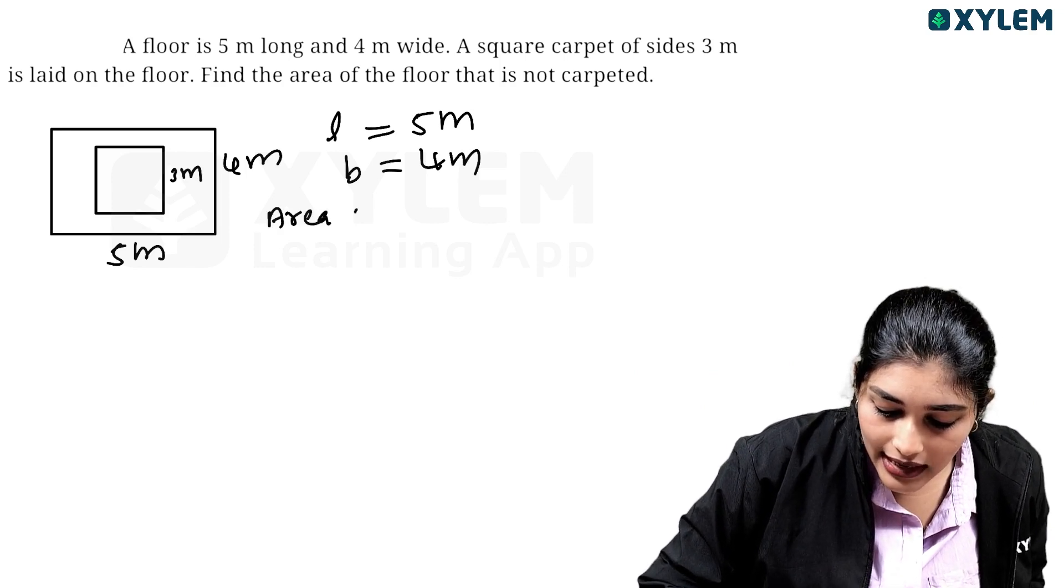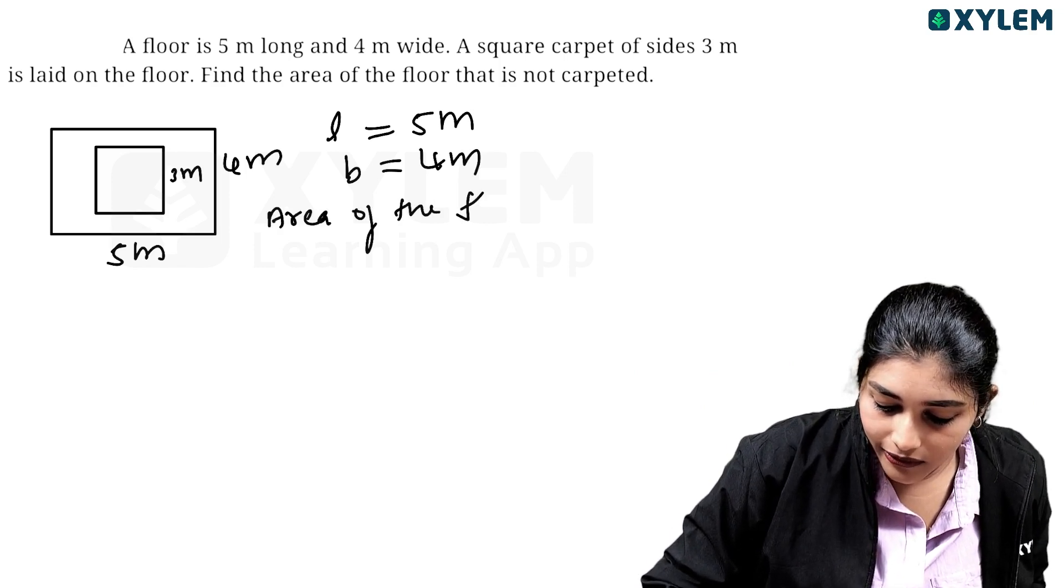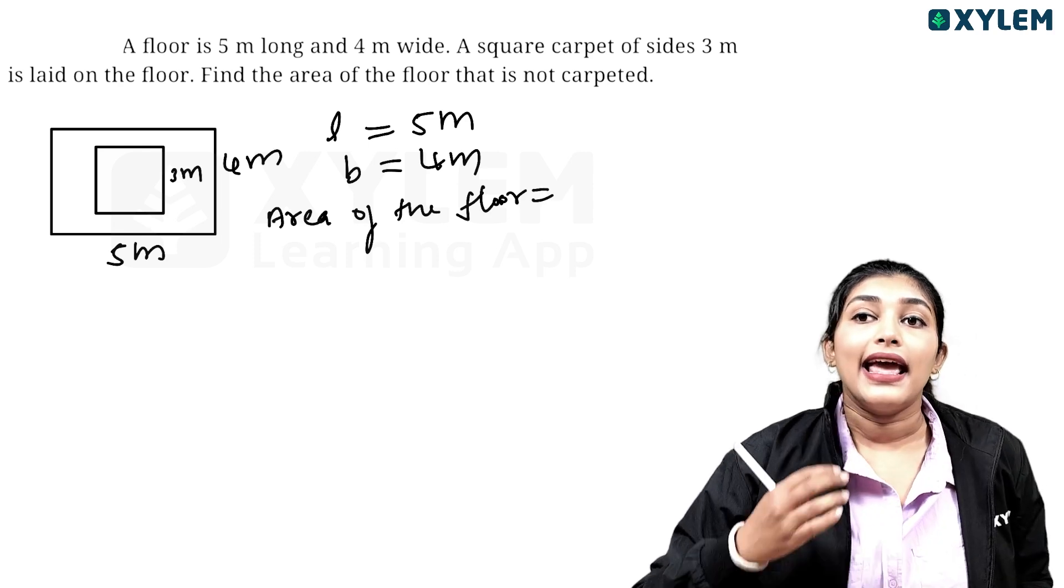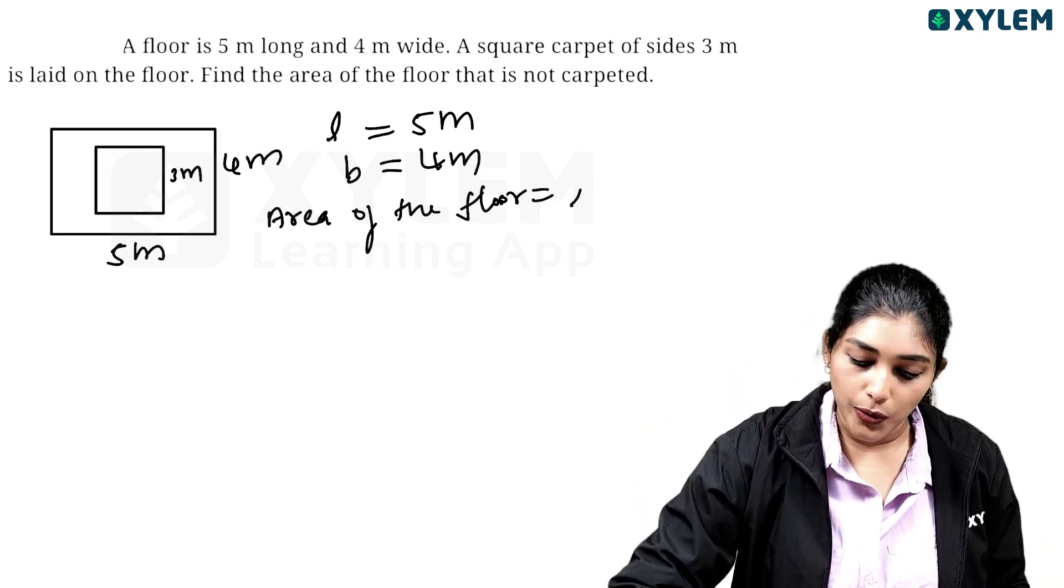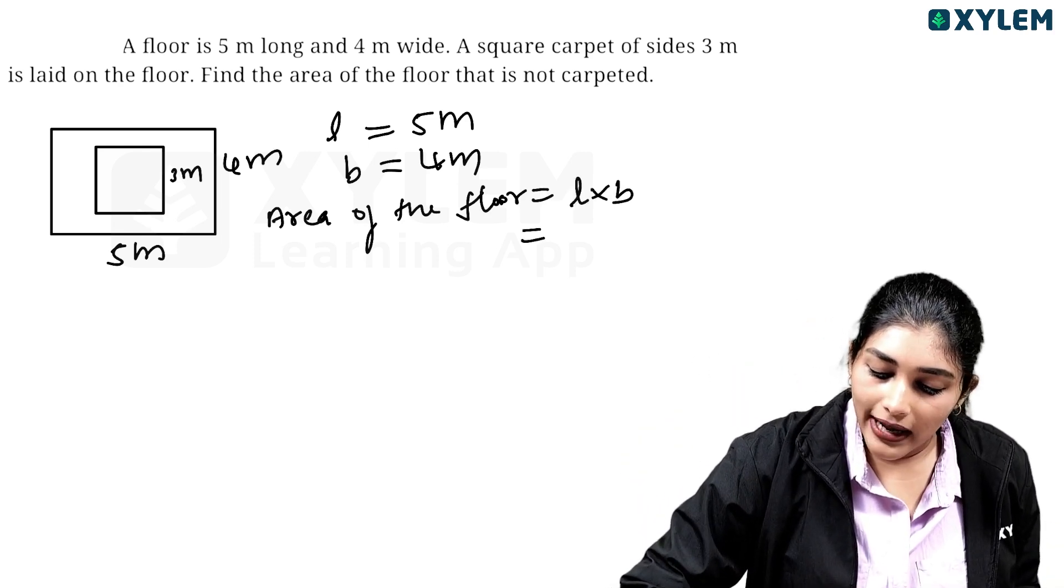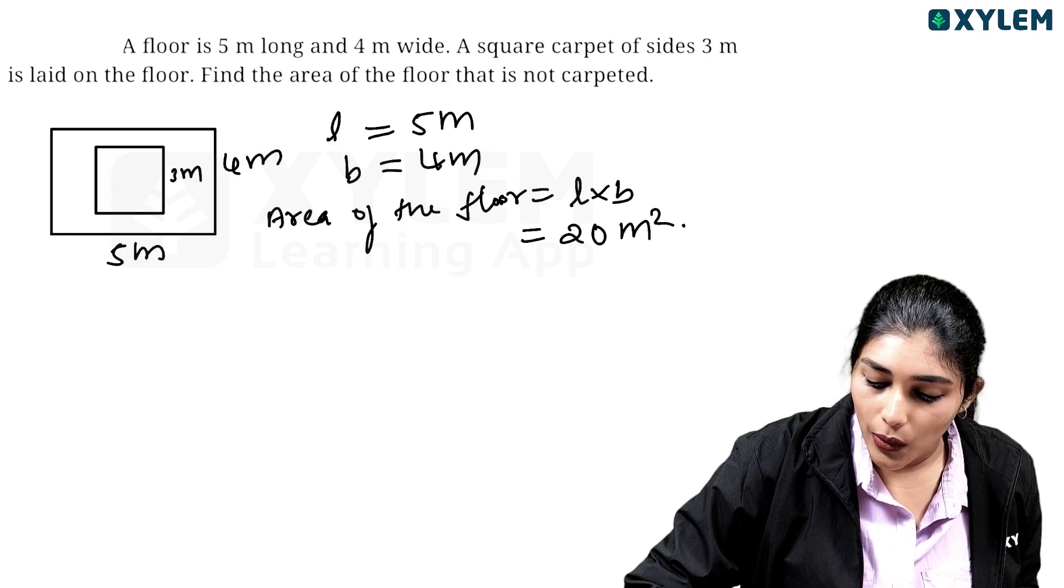Then area of the floor, area of the floor and the length into breadth is L into B which is equal to 5 into 4 and the 20 square meter.